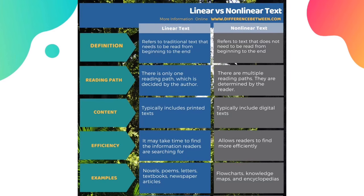This picture shows the simplest way to understand the difference between linear and non-linear text. In linear text, one must read from beginning to end. There is only one reading path, decided by the author. This typically includes printed text, and it may take time to find the information readers are searching for. Examples include novels, poems, letters, textbooks, and newspaper articles. Non-linear text does not need to be read from beginning to end, has multiple reading paths determined by the reader, and typically includes digital text. Examples include flowcharts, knowledge maps, and encyclopedias.